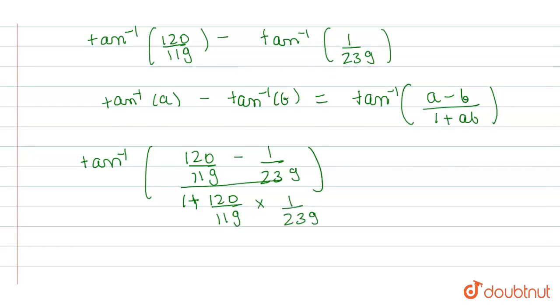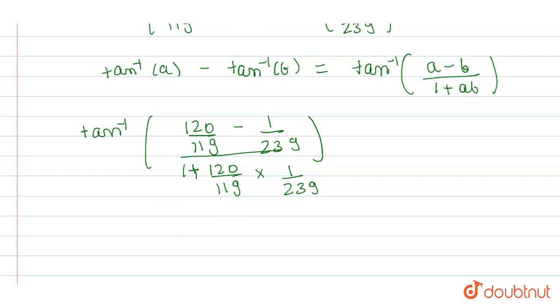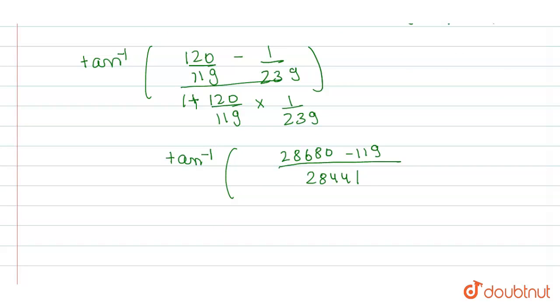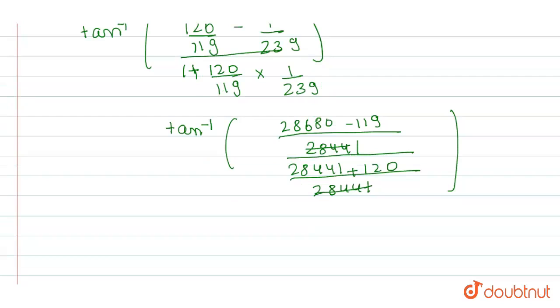Now, we will solve this value. When we take LCM, we get tan inverse of 28680 minus 119 divided by 28441 plus 120 upon 28441. Here, 28441 will cancel each other out.